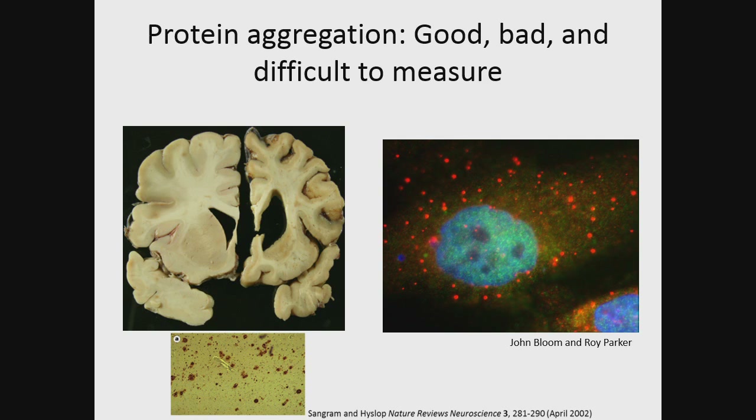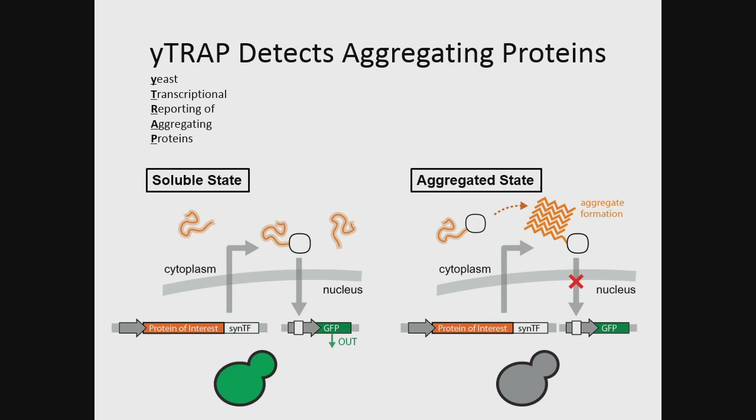One issue with studying protein aggregates is that they are extremely non-uniform in their structure and stoichiometry, so it's been very difficult or impossible to study them quantitatively in cells. To help fix this problem, we've developed the Y-TRAP sensor.